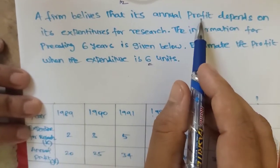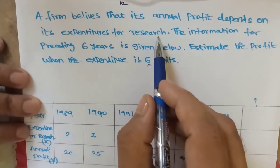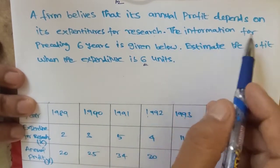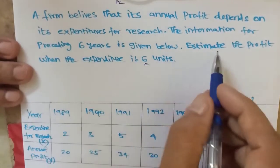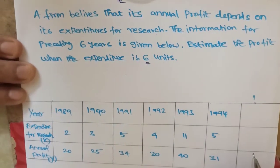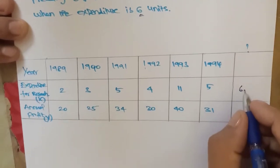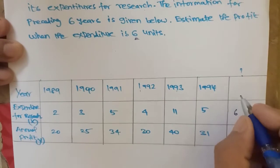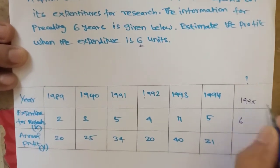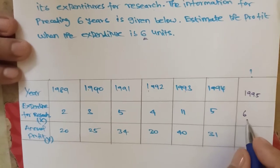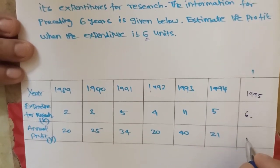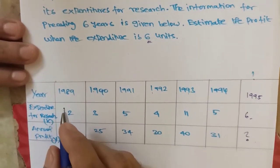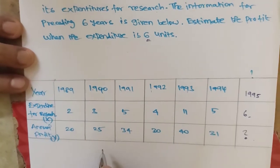The firm clearly states that annual profit is directly proportional to expenditure for research. The information for the preceding six years is given below. We need to estimate the profit when the expenditure is 6 units — that means in 1995, if expenditure for research is 6 units, what would be the annual profit?